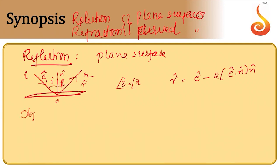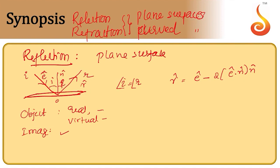In our current discussion, we consider two main things: one is object and the second is image. An object is said to be real if the rays actually diverge from that particular point, and virtual if the rays appear to converge. Image is decided by reflected or refracted rays. A real image is where rays actually converge; a virtual image is where reflected rays appear to diverge.